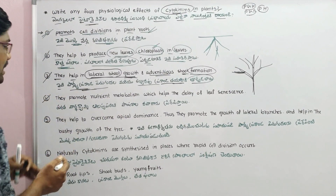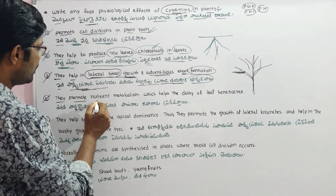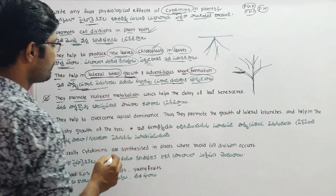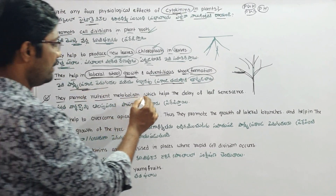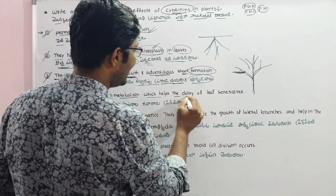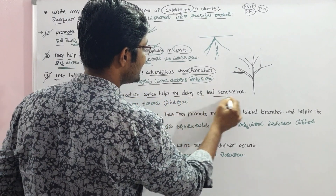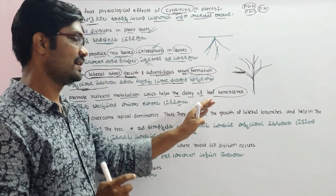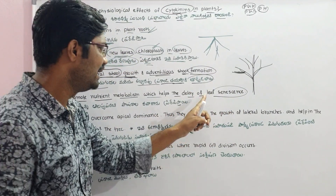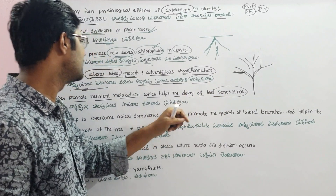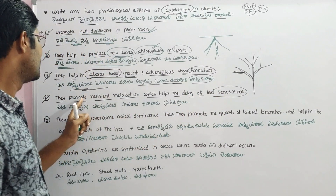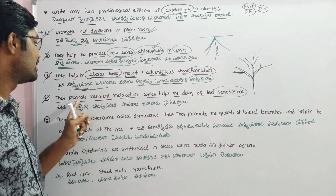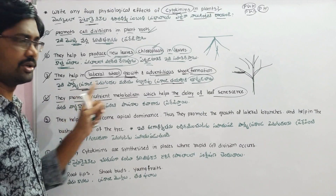The fourth physiological effect of cytokinins is that they promote nutrient metabolism, which helps in the delay of leaf senescence. Leaf senescence is delayed because cytokinins promote nutrient metabolism within the leaf tissue.